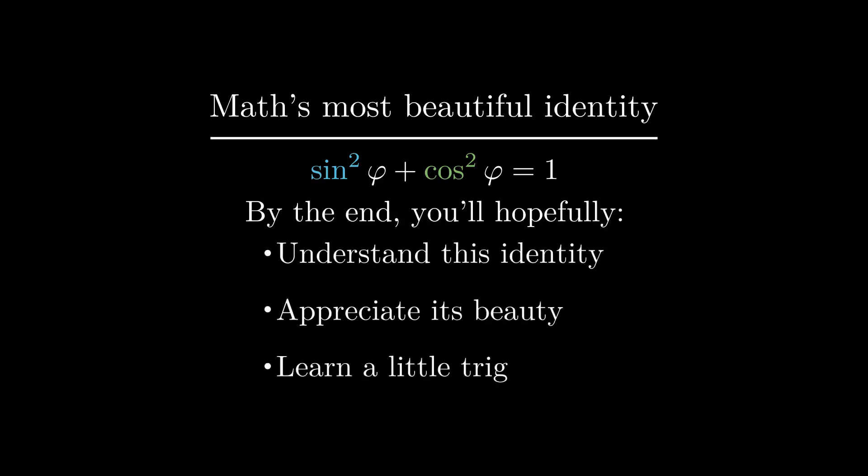What you're looking at is, in my humble opinion, one of math's most beautiful identities: the Pythagorean trig identity. Sine squared plus cosine squared equals 1. By the end of this video, I hope that you'll not just understand this mess of symbols, but also appreciate its beauty and hopefully learn some basic facts of trigonometry in the process.